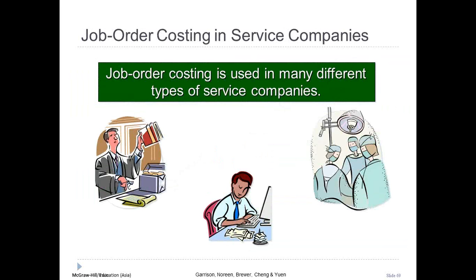Although our attention is focused on manufacturing applications, job order costing is also used in the services industry. In a law firm, each client represents a job. Legal forms and similar inputs represent direct materials. The time spent by attorneys represents direct labor. The cost of secretaries, clerks, rent, depreciation, and so forth represents overhead.